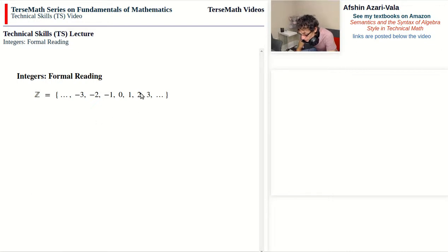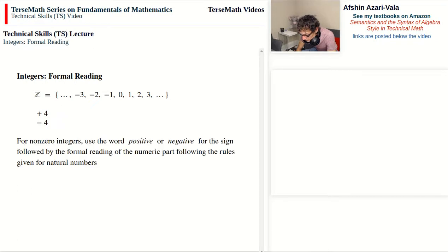On the positive side it's optional to write the positive sign down or not. The formal reading of these numbers is to use the word positive if you have a plus sign and negative if you have a minus sign. Beyond that, the reading of the number part is identical to reading it as a natural number.